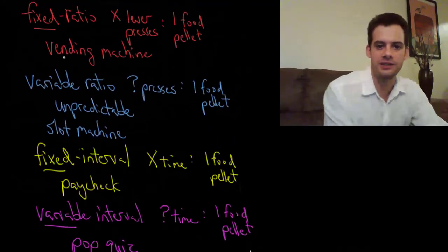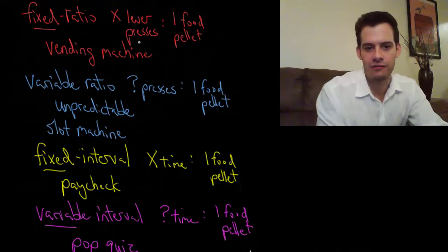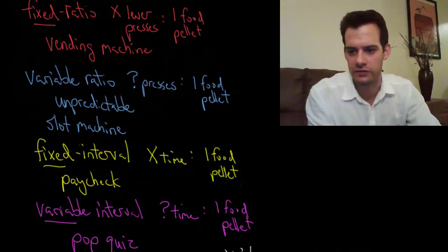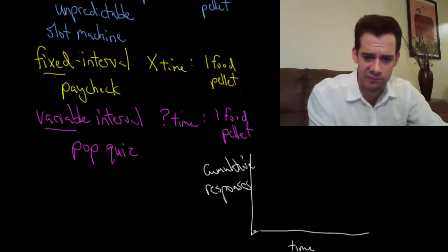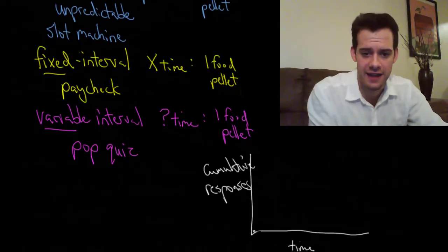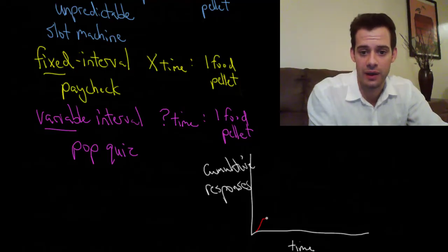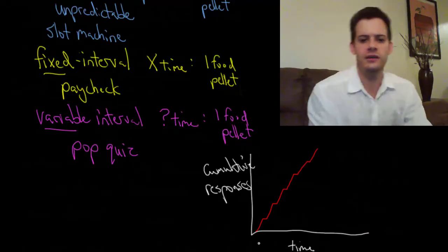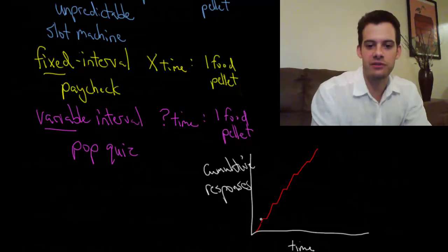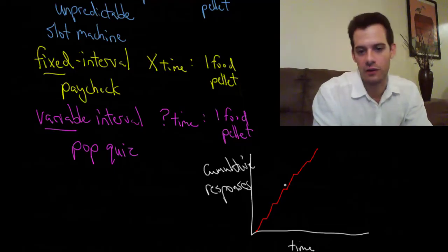In the fixed ratio schedule, let's say every five lever presses gets a food pellet. The rat will quickly press five times, stop and eat the food pellet, press five more times, eat, then press five more times. So we get a stepped line — five behaviors in a row, then a pause to eat, five in a row, pause, and so on.